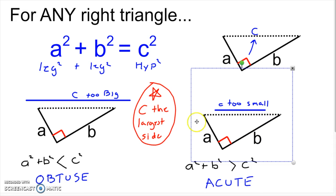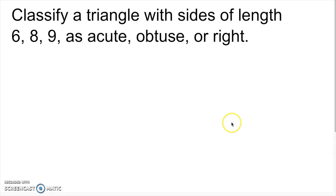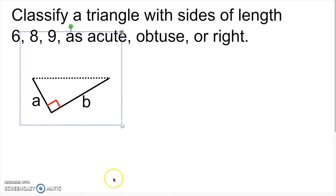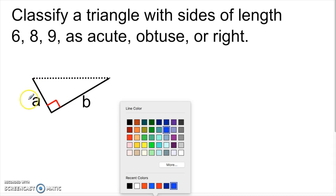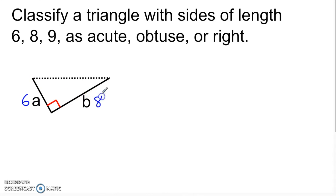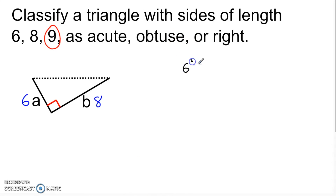Let's run through some examples. Say I want to classify a triangle with sides of length 6, 8, and 9 as acute, obtuse, or right. A is 6, B is 8, and C is 9 — our biggest side. We check: 6 squared plus 8 squared — does that equal 9 squared? We have 36 plus 64 on the left and 81 on the right. 36 and 64 is 100, and 100 does not equal 81.